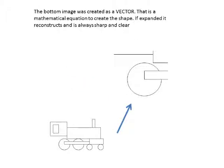The bottom image was created as a vector. That is, a mathematical equation to create the shape. If expanded, it reconstructs and is always sharp and clear.